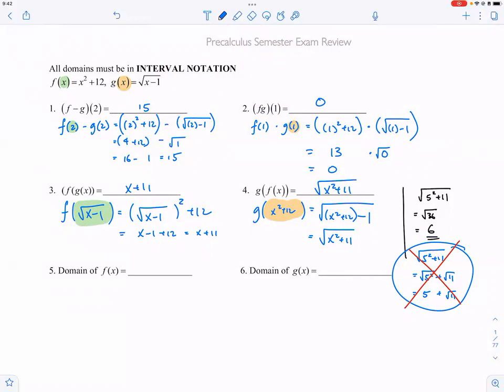Number five, it asks for the domain. Oh wait, hold on, let me finish number four first. So number four, the answer is simply X squared plus eleven since we cannot go any further with this expression. So that's where we will stop. For number five, domain of F of X.